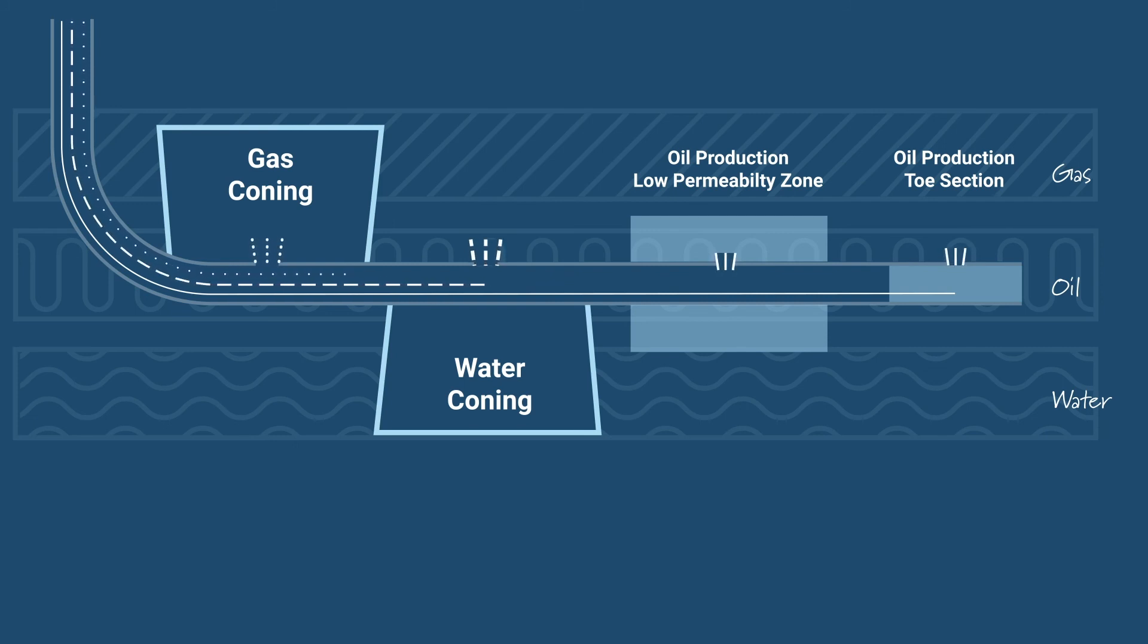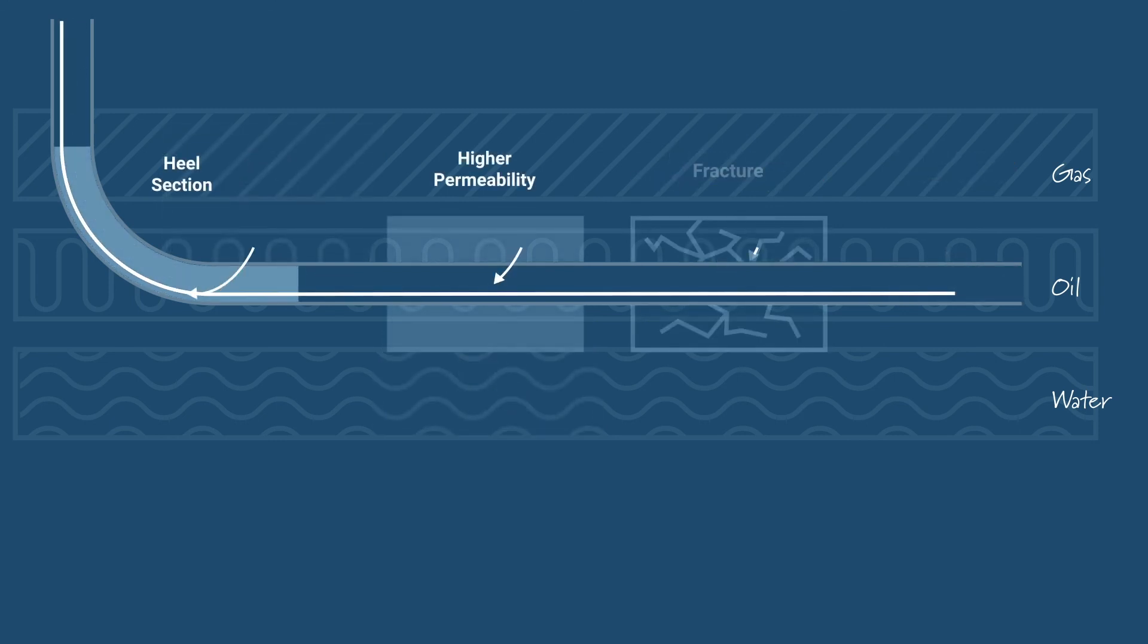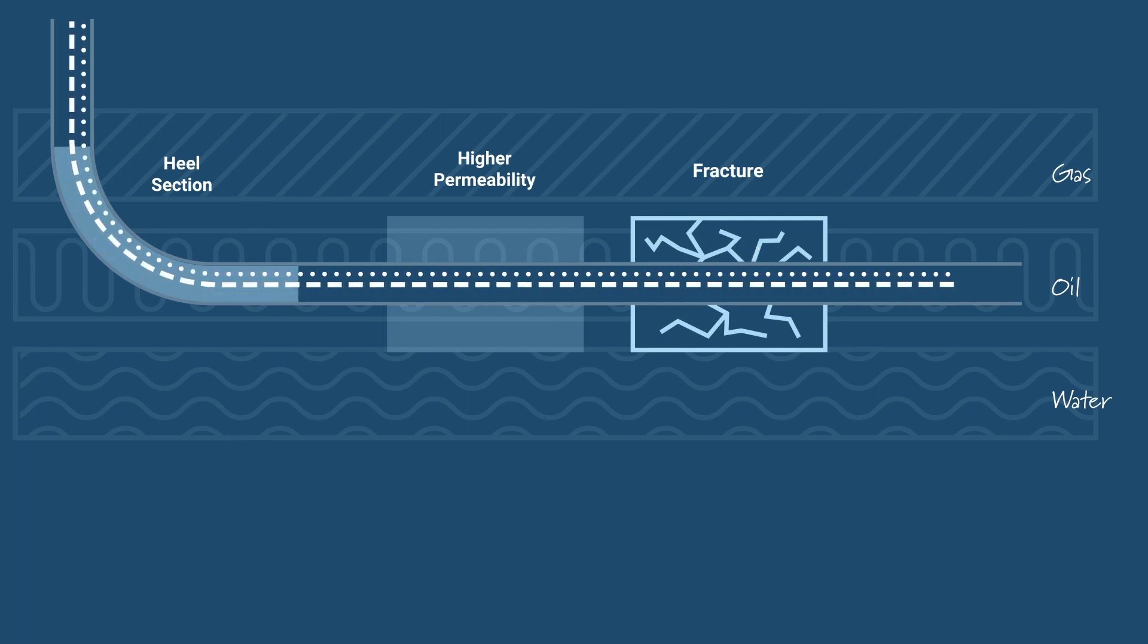This is why the majority of reservoir oil never gets produced. The areas that favor faster oil production also favor early water or gas breakthrough, which in turn force the choking of the entire well, leaving oil-rich zones unrecovered.